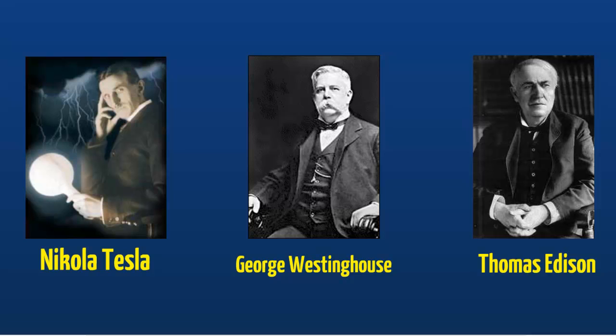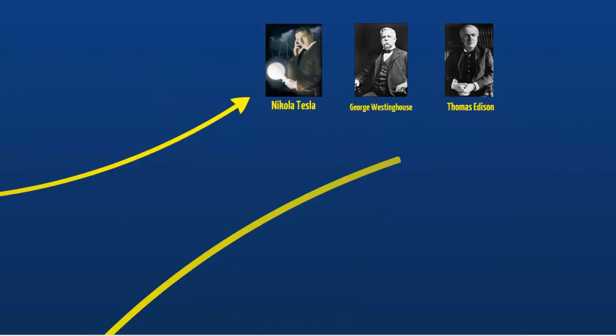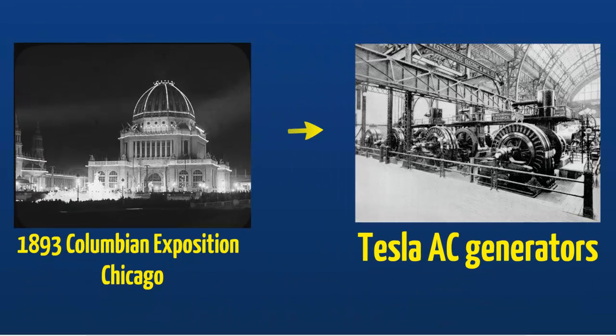Despite all the bad press, good times were ahead for Tesla and Westinghouse. In 1893, Westinghouse underbid Edison to power the Columbian Exposition in Chicago. This was to be the first World's Fair to be solely powered by electricity. The main reason Westinghouse won the bid was because Tesla's AC system was much more efficient and used much less copper wire than Edison's DC system, making it considerably cheaper.